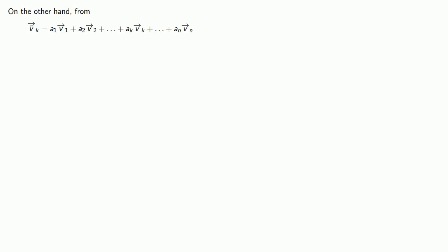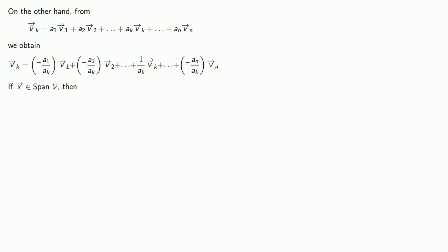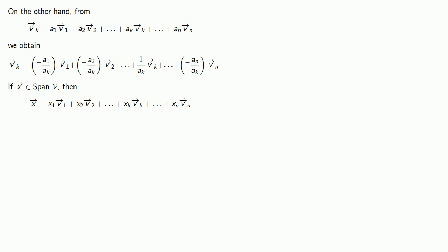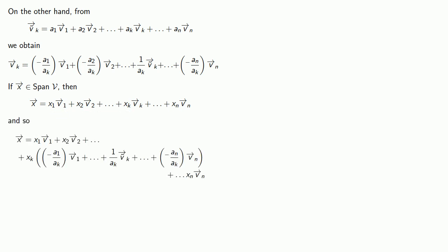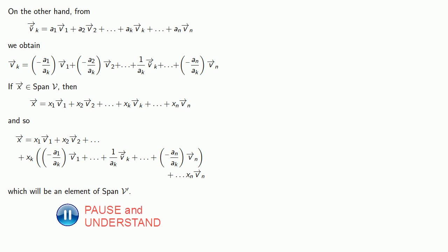On the other hand, because v tilde k is a linear combination of the vectors in v where ak is not equal to 0, we can solve for vector vk. If x is in the span of v, then x is a linear combination of the vectors in v, and so x will be an element of the span of v prime. That tells us the span of v and the span of v prime are the same.